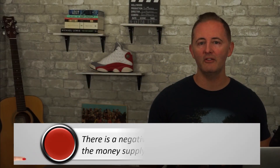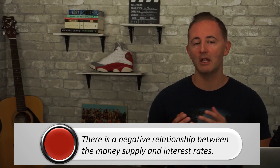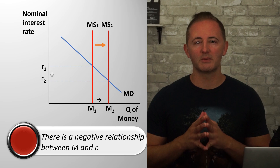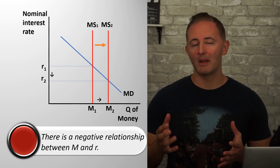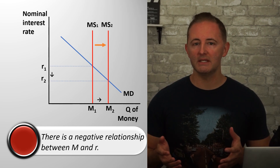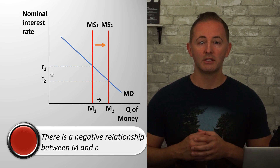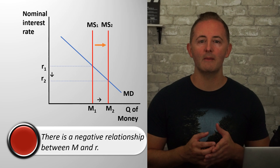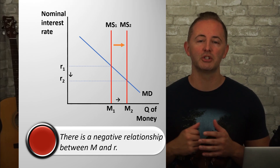The first thing I want to point out is that there is a negative or inverse relationship between the money supply and interest rates. We can see this illustrated on our money market model, which we'll explore a lot more of in part two. You can see that if the money supply increases and shifts to the right, the nominal interest rate decreases. So when the Fed increases or decreases the money supply, its real purpose is to affect nominal interest rates.